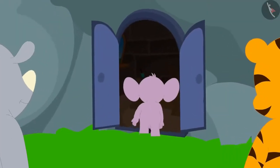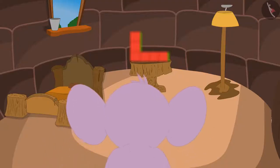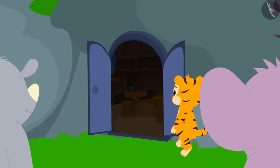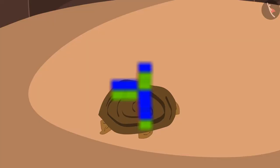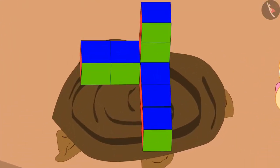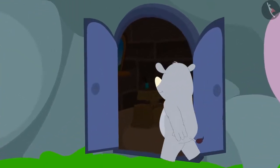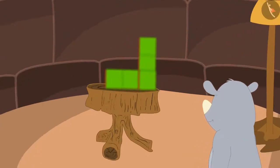First, Appu saw the shape made by Golu and went and drew his picture. Then, Sher Khan also went and saw the shape made by Golu and made his picture. And finally, Gaggoo went and saw the shape made by Golu and made his picture.